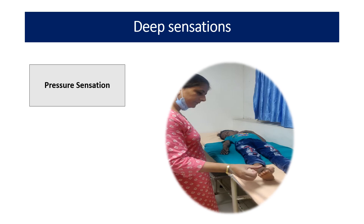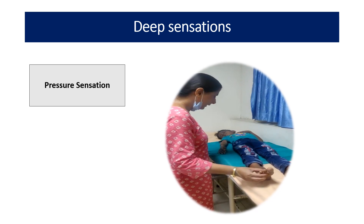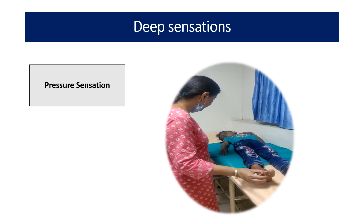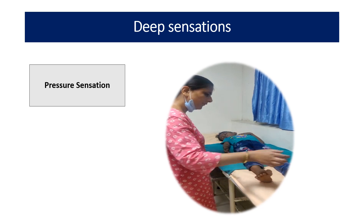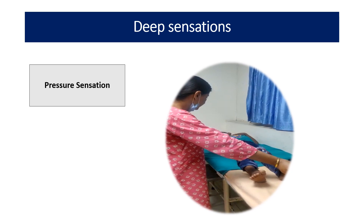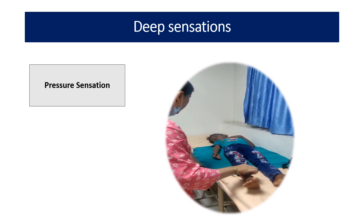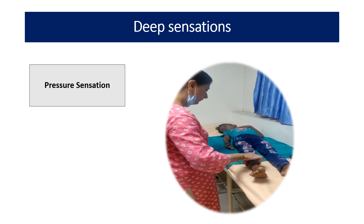After superficial sensation, we assess deep sensation. For pressure, we use our thumb to press the body part, and the child should say which body part is being pressed. In this video, you can see I am comparing both right and left, moving from distal to proximal for pressure sensation.